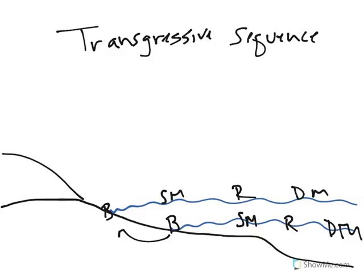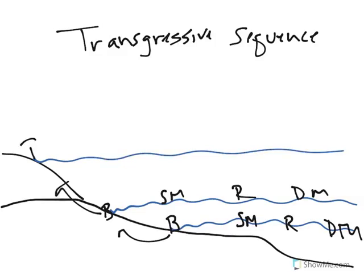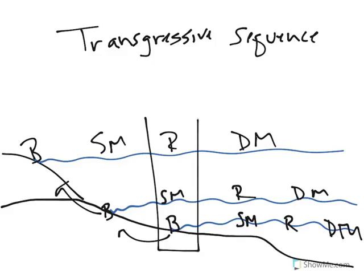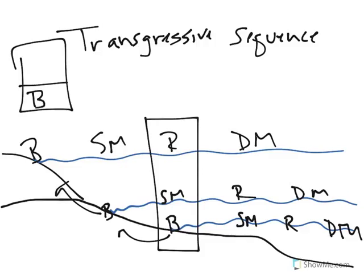Let's make our water come in even higher now. Remember, our beach moves further inland. So here's our beach, our shallow marine, our reef, and our deep marine. So what should I see in that transgressive sequence? What I should see is, at the bottom, we have our beach, then we have our shallow marine, then we have our reef. If I kept transgressing, we might see the deep marine on top.